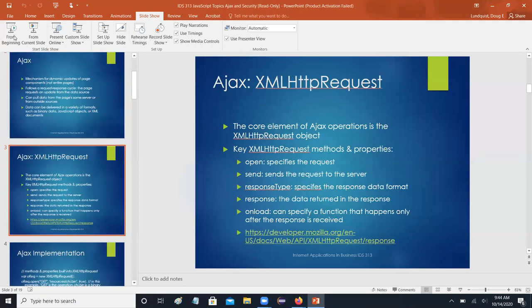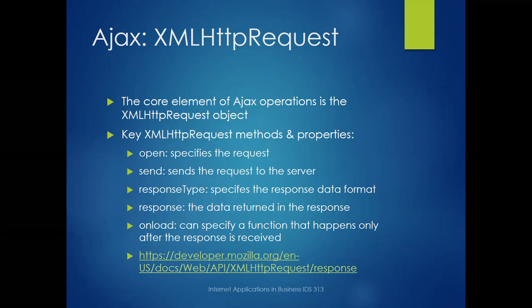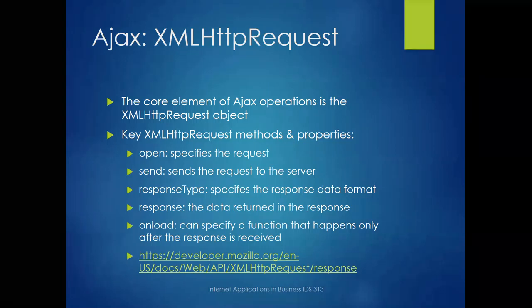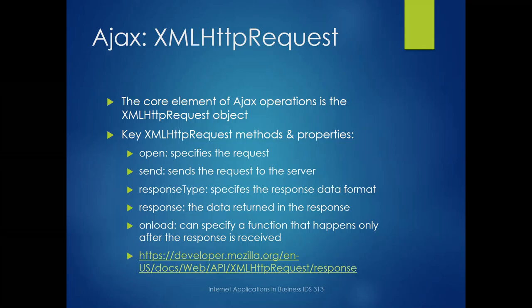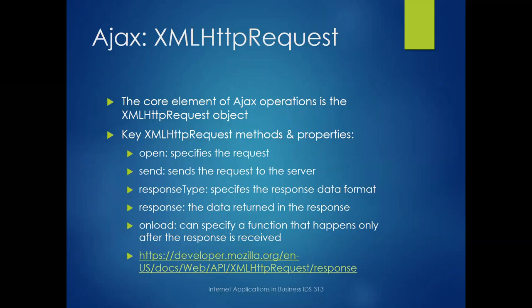The core element of AJAX is the XMLHttpRequest object. XML is an object description language, HTTP is hypertext transfer protocol — the standard way to send data over the internet — and request just means you're asking for something. XMLHttpRequests have a certain number of methods and properties built in, already part of the JavaScript language, similar to how Canvas and context have built-in methods.